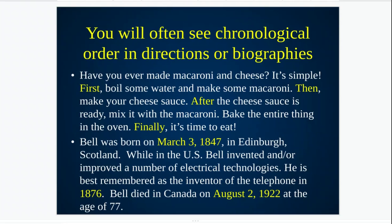The second example is a biography. Chronological passages can sometimes be biographies or history-related, and if it's a person's biography about their life, you're going to see dates. Bell was born March 3rd, 1847 in Edinburgh, Scotland. While in the U.S., Bell invented and improved a number of electrical technologies; he is best remembered as the inventor of the telephone in 1876. Bell died in Canada on August 2nd, 1922 at the age of 77. This gave me a lot of historical information, and the signals were those dates. Make sure you've highlighted your dates in example number two.